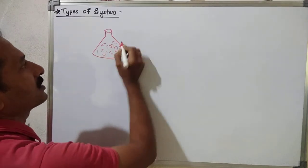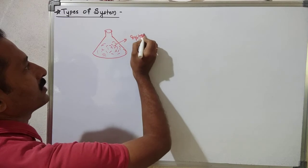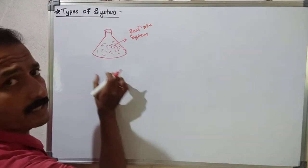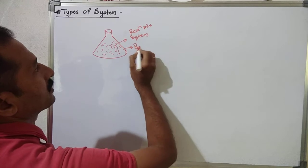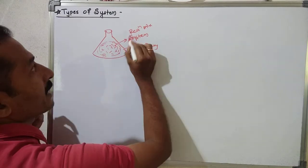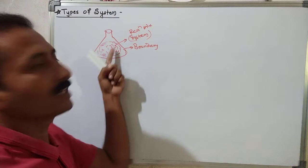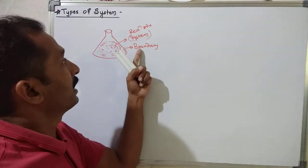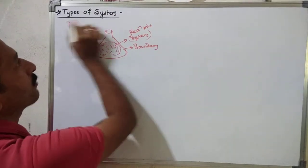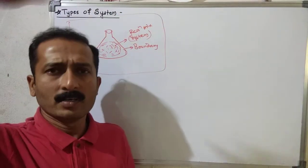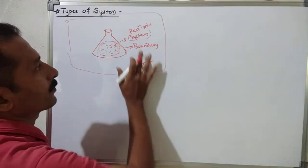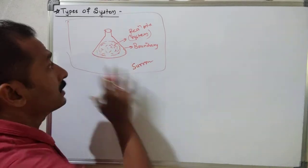If we are considering this reaction, the reaction mixture is our system. This is the boundary — this is the surface. So what is the system? The reaction mixture. We study the whole data, collect thermodynamic data. This is the boundary, and this is the surrounding — persons, separate boundary. The surrounding includes air, gas, plants, animals — all of that.